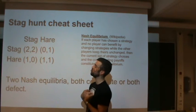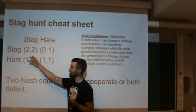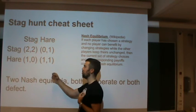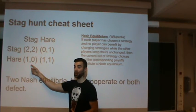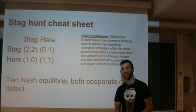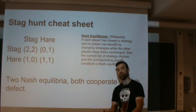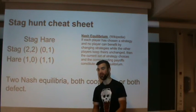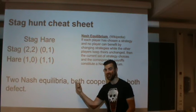In the stag-stag situation, if I choose to hunt hare instead, I would only get one instead of two. In the hare-hare situation, if I choose to hunt stag, I would get zero instead of one. So obviously we have two Nash equilibria here. This is different from the prisoner's dilemma, which has only one Nash equilibrium — defect-defect — while the stag hunt has two: cooperate-cooperate and defect-defect.